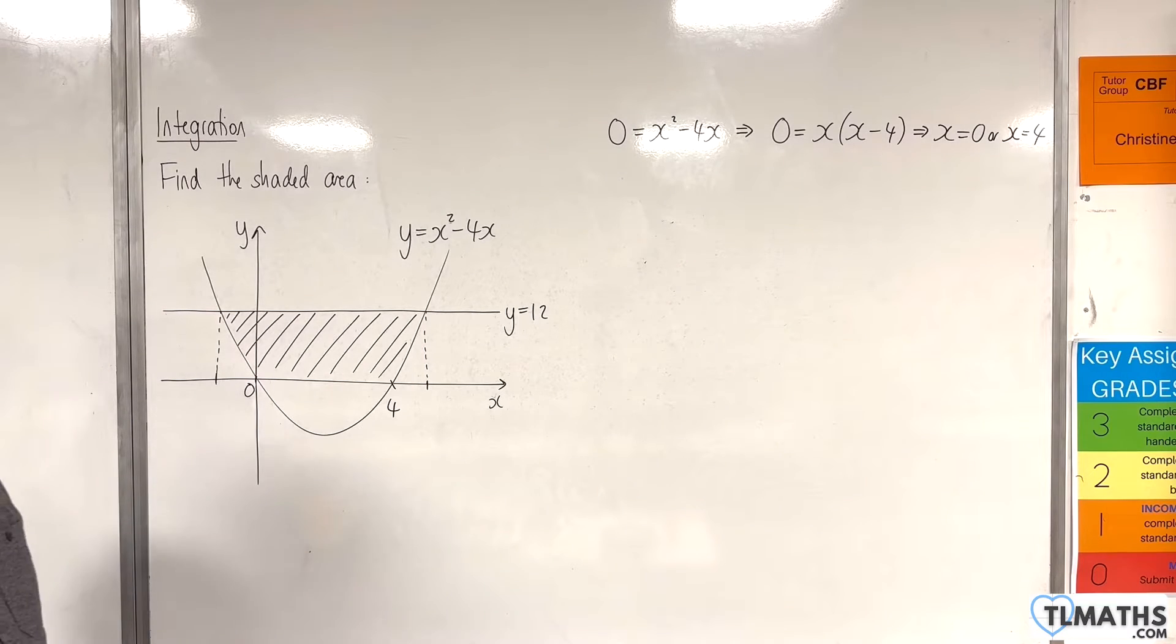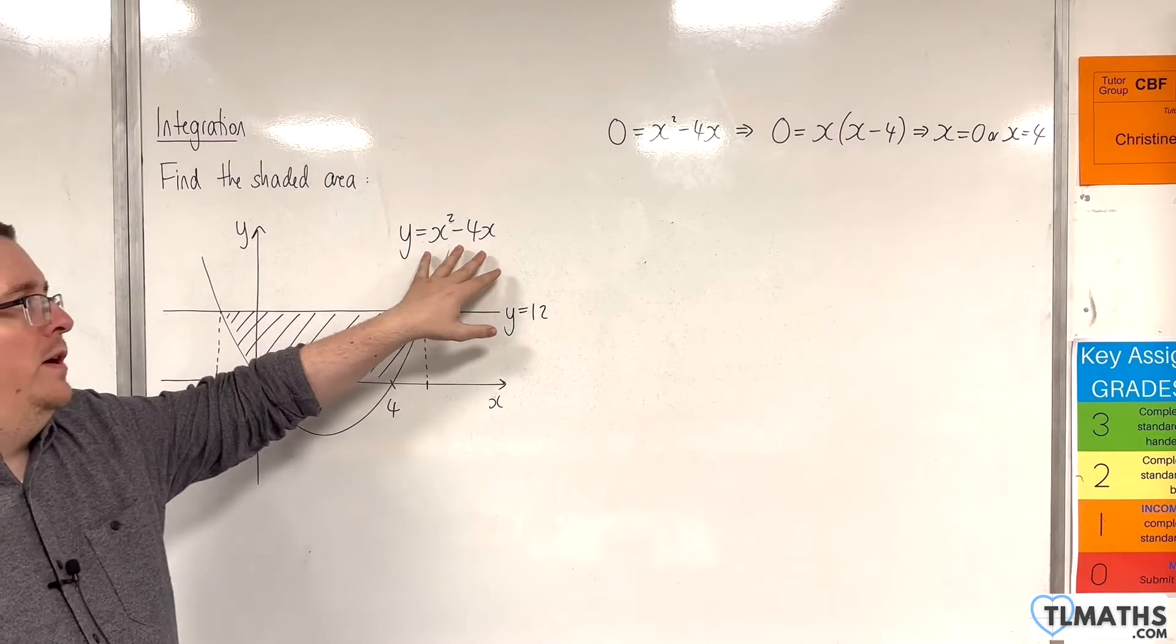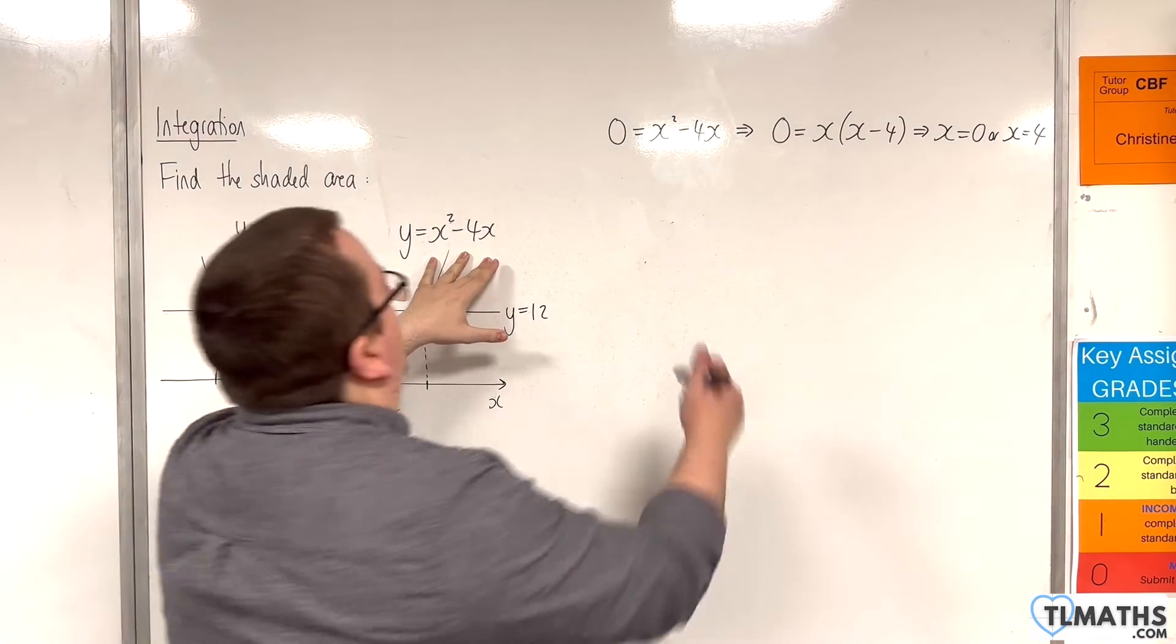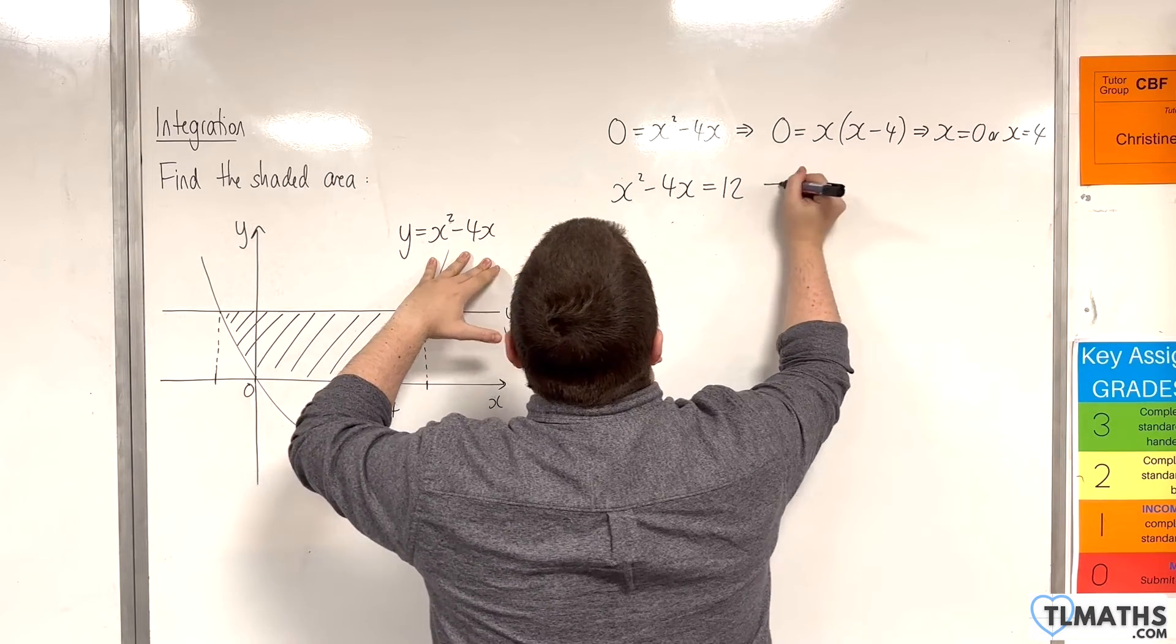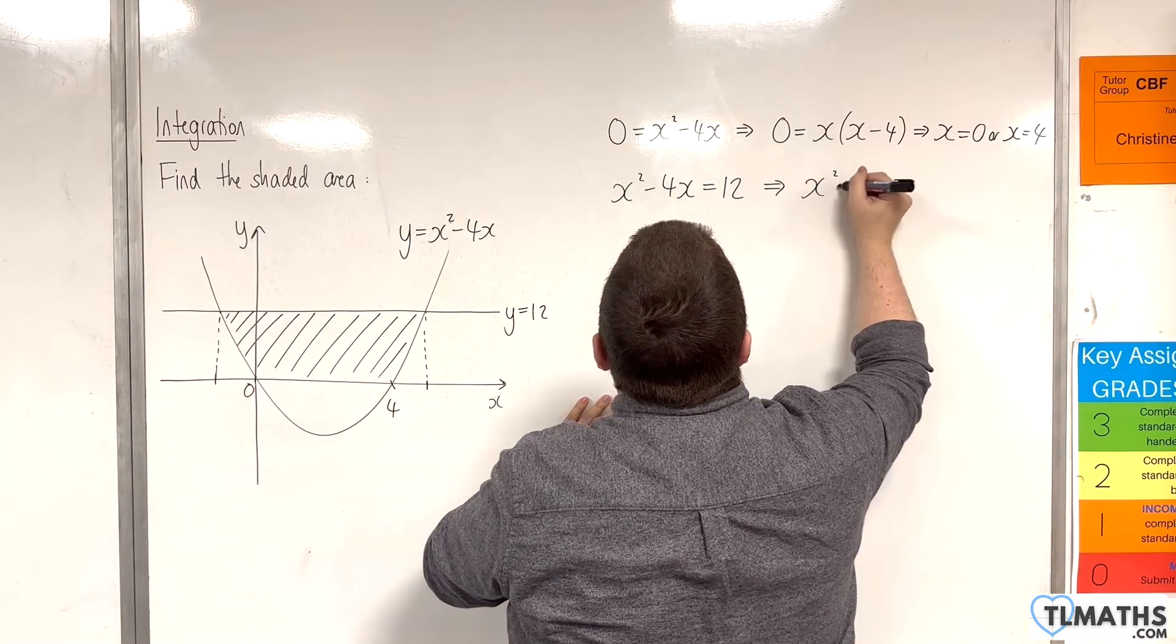Right, now to find where the line y equals 12 intersects y equals x squared take away 4x, we're going to put 1 equal to the other. Like so. So subtract 12 from both sides.